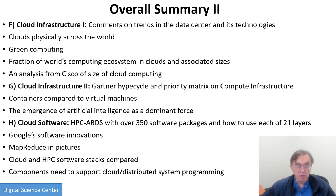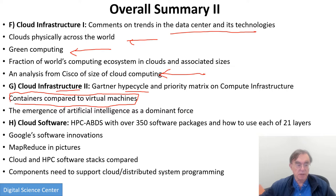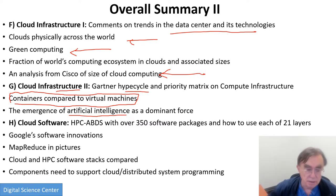Then we look at the infrastructure with two lessons. We look at data center trends and their technologies — how they're distributed geographically, the impact on electricity (namely green computing), and also the total sizes of clouds, including an analysis by Cisco. In the next unit, we look at hype cycles on compute infrastructure. We compare containers and virtual machines — an interesting battle which is still not quite resolved. Virtual machines are more secure; containers are faster and easier to use. And then we have AI, which is bound to be driving all of this because it's the dominant application with a lot of particularly special challenges.